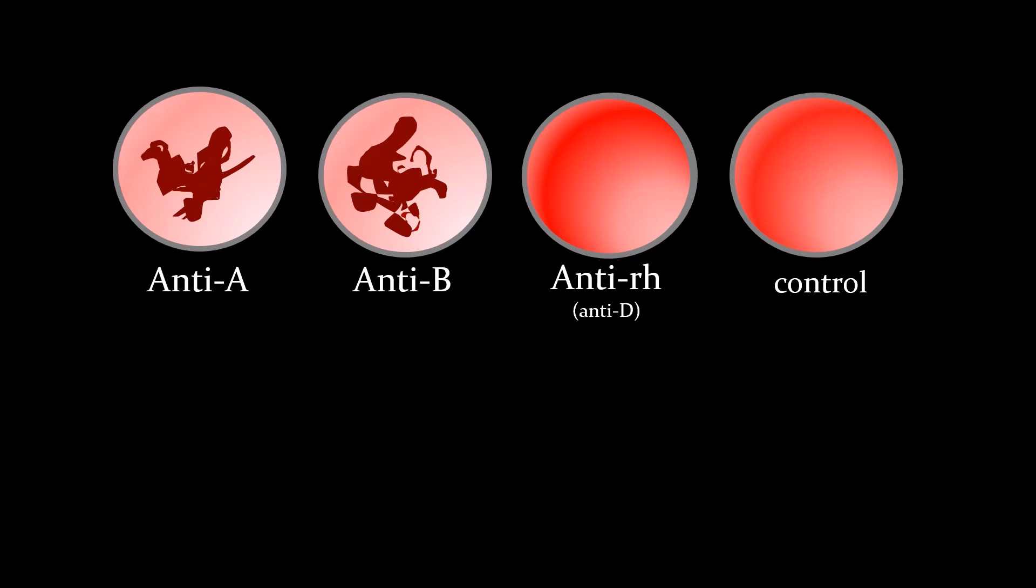This person has antigen A and antigen B, but they don't have the RH. So they would be AB negative.